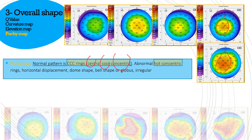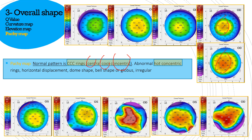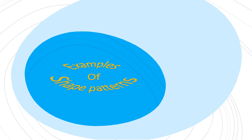Let's see more examples. Here, the rings are cool — yellow, green, and blue — but the problem is they are not central. So this is not a central cool concentric ring pattern, making it an abnormal pattern. Here also cool colors, but the rings are displaced upwards, so these are also not central and represent abnormal patterns. Other abnormal pachymetry patterns include bell-shaped, irregular pattern, and inferiorly displaced pattern, all suggestive of abnormal corneas.